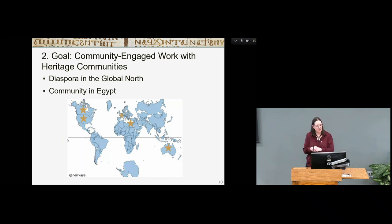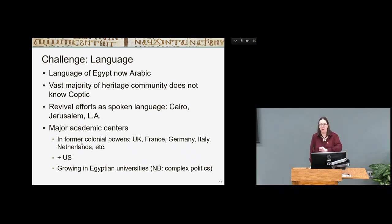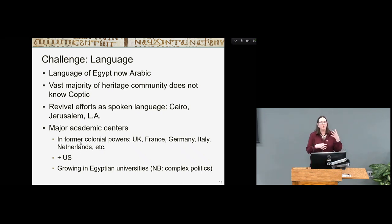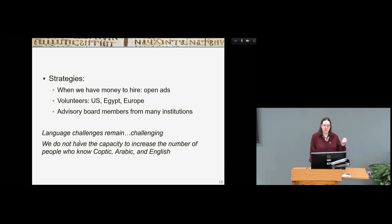If we want to do community engaged work with heritage communities in both Egypt and the diaspora, we have a challenge of language. The vast majority of the heritage community doesn't actually know Coptic, and the major academic centers are in the global north and former colonial powers. There is a growing effort to teach the Coptic language in Egyptian universities, which is complicated because Egyptian universities are not run by Copts. We do have volunteers in the US, Egypt, and Europe, and advisory board members from all over the world, but language challenges remain because we don't have the capacity to increase the number of people who know Coptic.